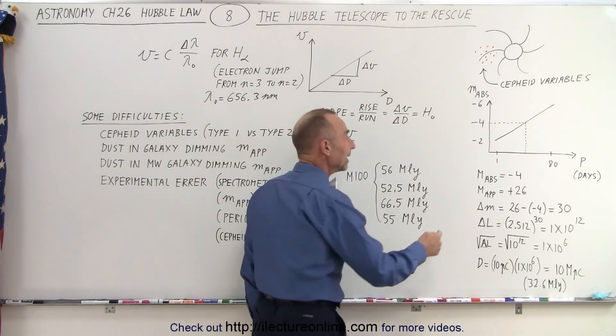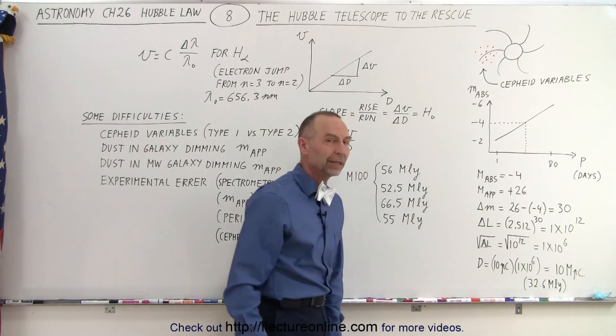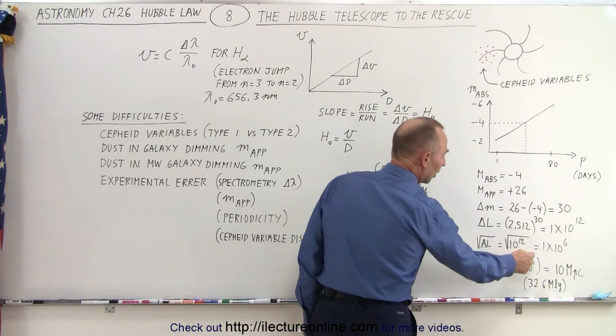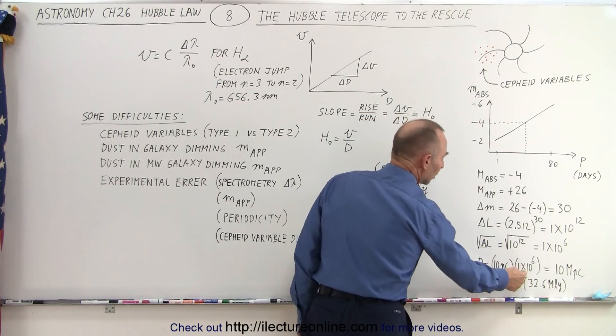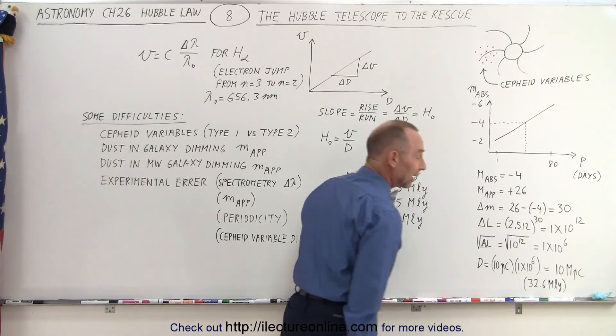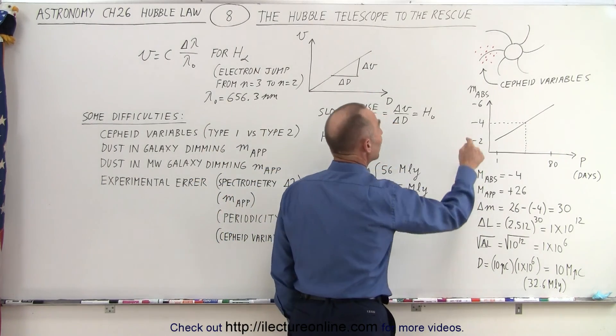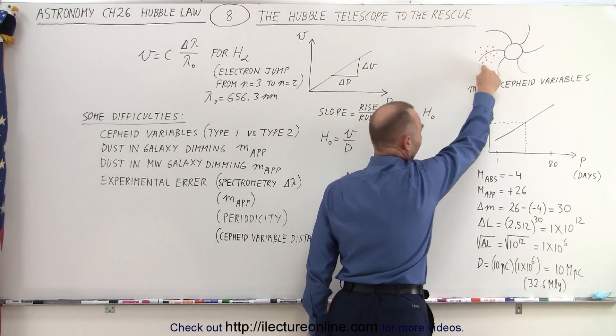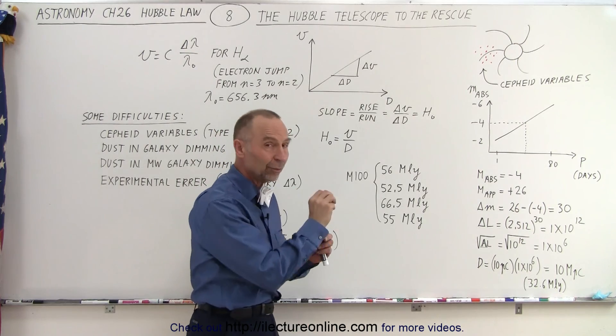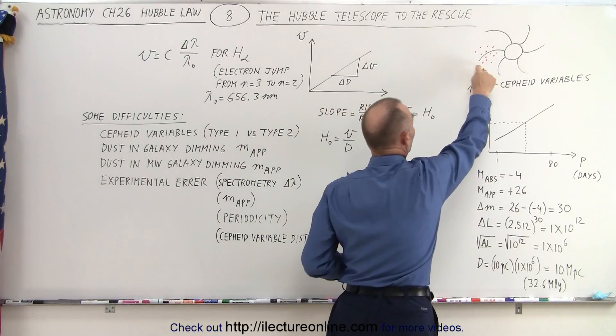The absolute magnitude is a trillion times brighter than the apparent magnitude. Then to find the distance you take the square root of that number. So you take the square root of a trillion, you get a million. You take a million, multiply times the standard distance of 10 parsecs, and you get 10 megaparsecs, which is 32.6 million light years. Then you do it again for the next one, the next one, the next one, and then you average that out. Whatever the numbers you get for the average of all the Cepheid variables, that will be the distance to that particular galaxy.